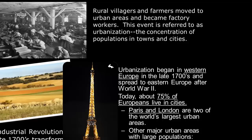Urbanization in Europe began in Western Europe in the late 1700s and spread to Eastern Europe after World War II — a gap of roughly 150 to 200 years. This tells us that Western Europe was urbanized long before Eastern Europe. Today, about 75 percent of Europeans live in cities, which is about what you would expect for a first-world or Western continent, much like North America.